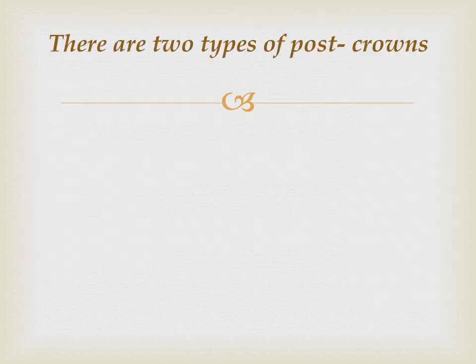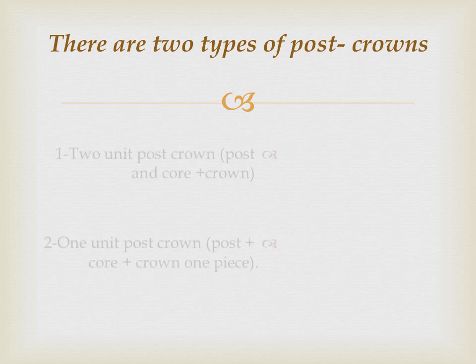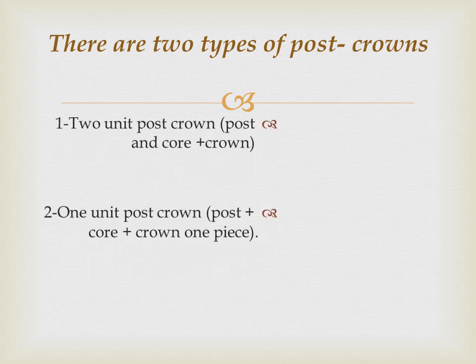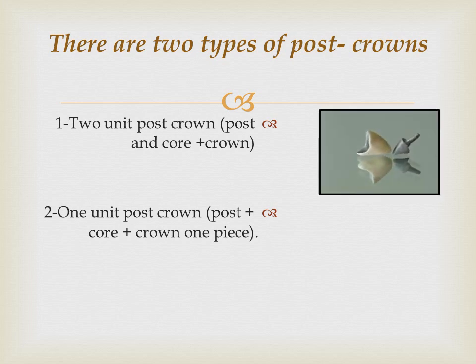There are two types of post crown: the two-unit post crown and the one-unit post crown. In the two-unit post crown, the post and core form one unit and the crown is the other unit, as seen in this picture.